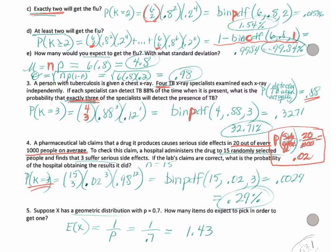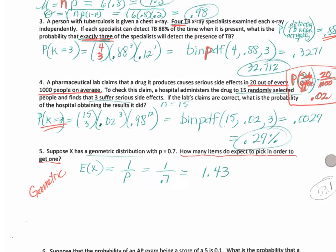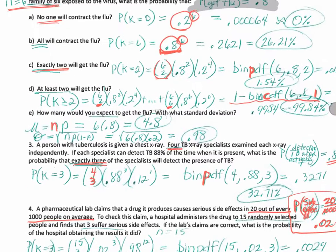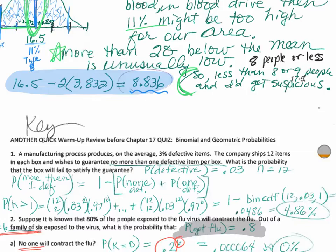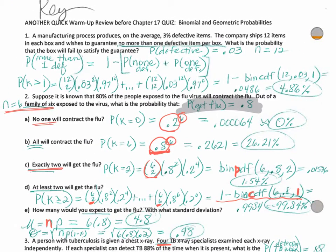And the last one on this page: how many items do you expect to pick until you get one? That's going to be geometric — 1 over P, which is 1 over 0.7. The reason I did problem 1 last is because it can actually be done in several different ways, and I didn't want to get you confused until we had a solid handling.